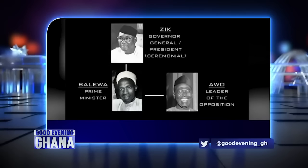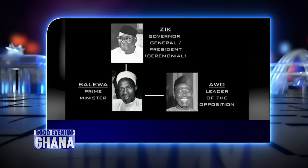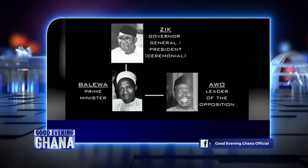Awolowo had always felt that the Yorubas should be the leaders, and was unhappy as leader of opposition. Azikiwe, on the other hand, was in a figurehead role, similar to the Queen's role in England today. In fact, Azikiwe had only joined with the NNDP because Festus Okotie-Eboh had forced him to.